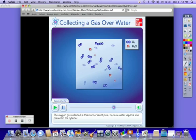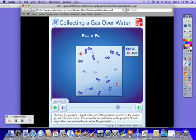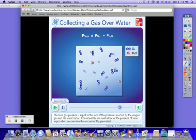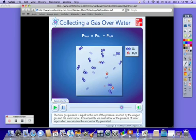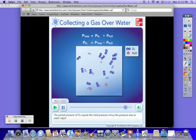The oxygen gas collected in this manner is not pure because water vapor is also present in the cylinder. The total gas pressure is equal to the sum of the pressures exerted by the oxygen gas and the water vapor. Consequently, we must allow for the pressure of water vapor when we calculate the amount of O2 generated. The partial pressure of O2 equals the total pressure minus the pressure due to water vapor. This is simply stating that when you collect a gas over water, you're not going to have just the gas that you collected. You're also going to have a small amount of water vapor and that water vapor needs to be accounted for.